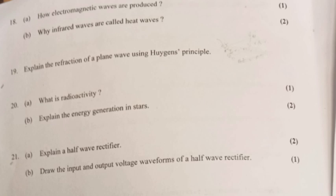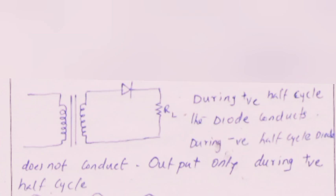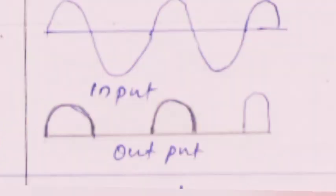Question 21A: Explain a half-wave rectifier. Part B: Draw the input and output voltage waveforms of a half-wave rectifier. Answer A: During positive half-cycle, the diode conducts. During negative half-cycle, diode does not conduct. Output only during positive half-cycle. Part B: Input and output waveforms.